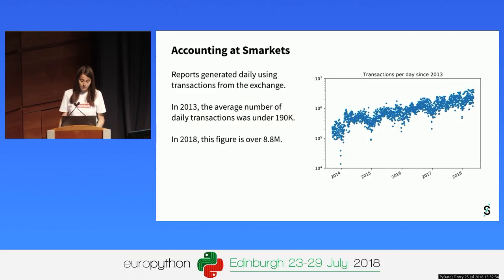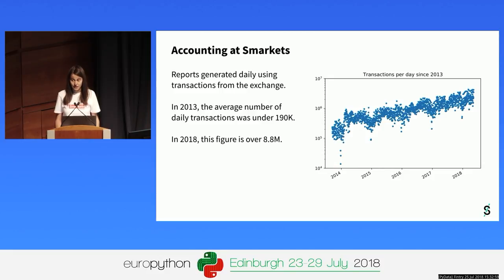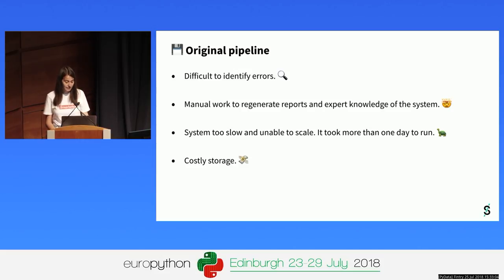The previous accounting pipeline was designed back in 2013, and at that point, the number of transactions that they needed to handle was below 190,000. The massive business growth at SmartKets during the last four years made this number of transactions increase over an order of magnitude. Now the number of transactions that the pipeline needs to process is more than 8.8 million.